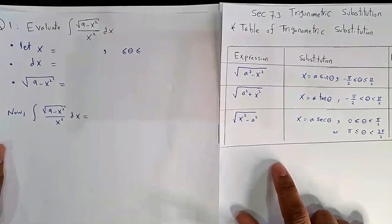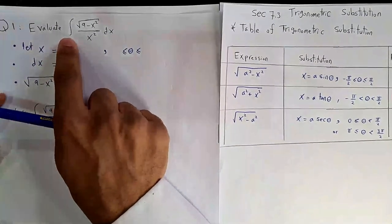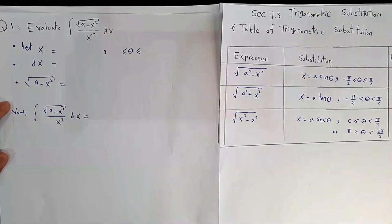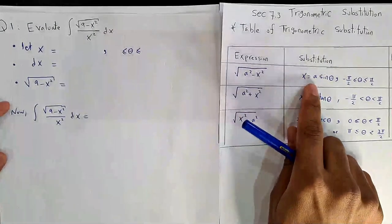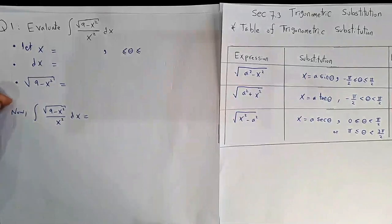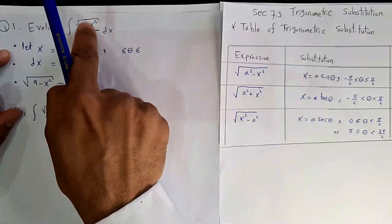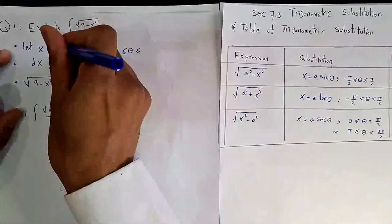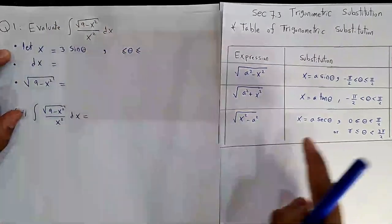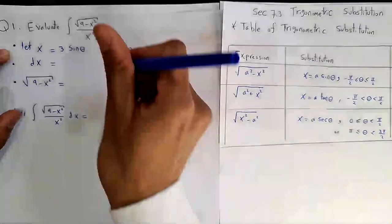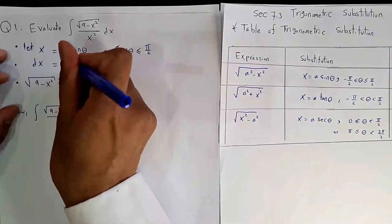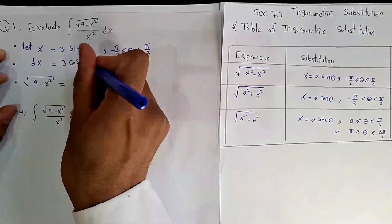Example 1: Evaluate ∫root(9-x²)/x² dx. We have a²-x² so we use the sine substitution. Here a = √9 = 3, so x = 3 sin θ, θ ∈ [-π/2, π/2]. Then dx = 3 cos θ dθ. Working out the root: root(9 - 9sin²θ) = 3|cos θ| = 3 cos θ.